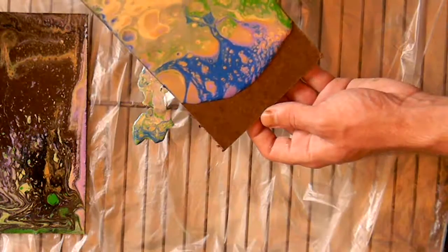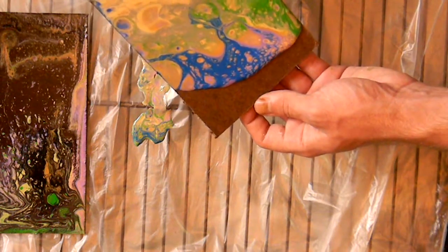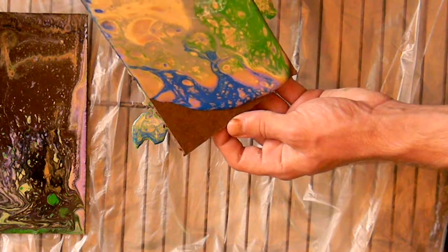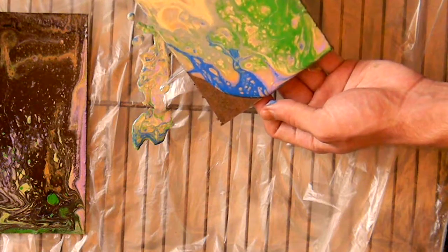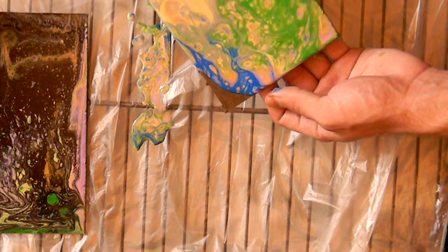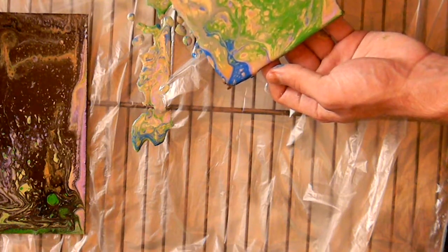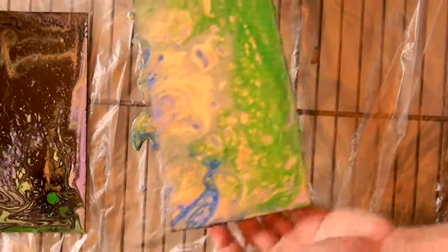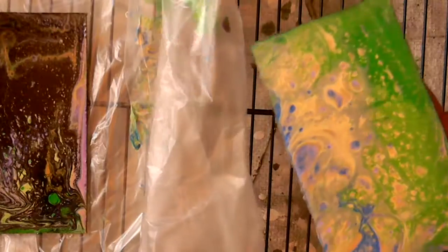Hopefully we don't lose too much of the blue when we tilt it this way. It looks like we're losing the blue on this one. Alright, after we get it to the corner, we can always tilt it back the other direction. Be careful not to set it in the paint that you just dripped off.